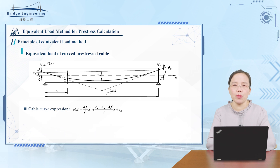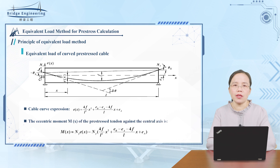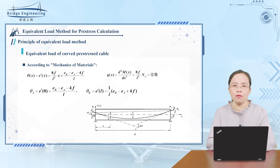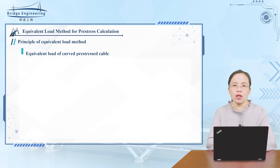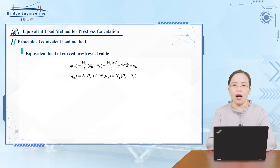Based on the above sign convention, the expression of the cable curve is as follows. The eccentric moment M of the pre-stressed tendon to the central axis is derived, and by combining the two formulas using the formula from Mechanics of Materials, the following results are obtained. Comparing these two formulas, the equivalent concentrated load Q is determined, and its direction is upward, which is positive.